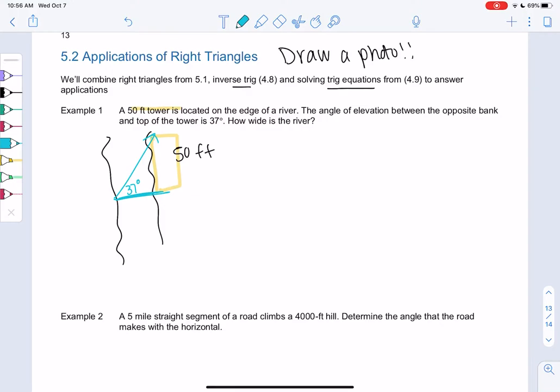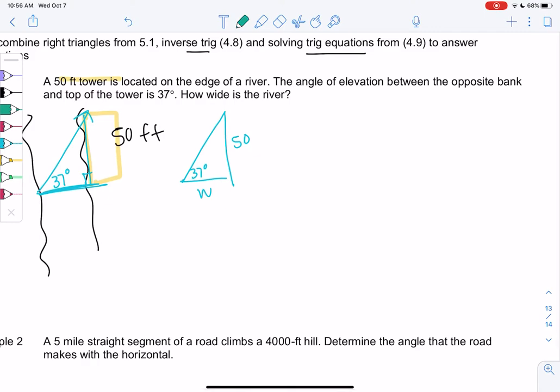And you'll notice we make a nice right triangle with the building. So how wide is the river? So we have 37 degrees, and we have 50, and here would be the width of the river. So I think tangent would be the most useful function here, because we have opposite and adjacent.